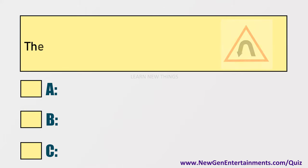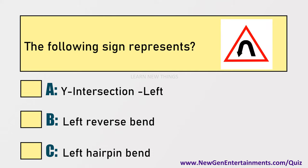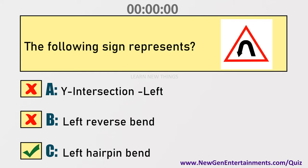The following sign represents: Options are: A) Y intersection left, B) Left reverse bend, C) Left hairpin bend. Answer: Option C, Left hairpin bend.